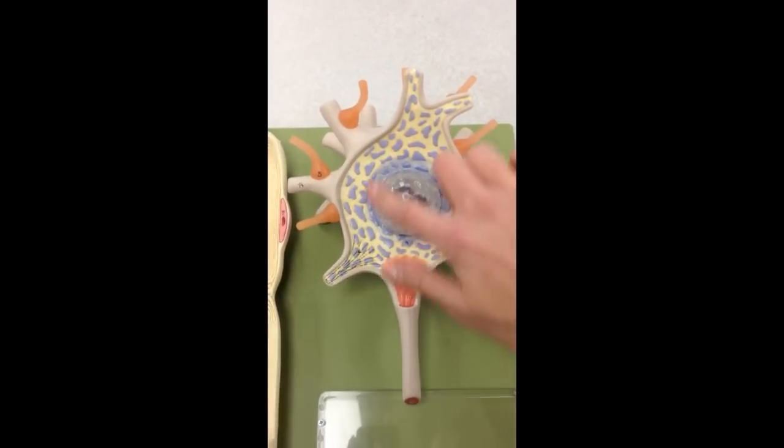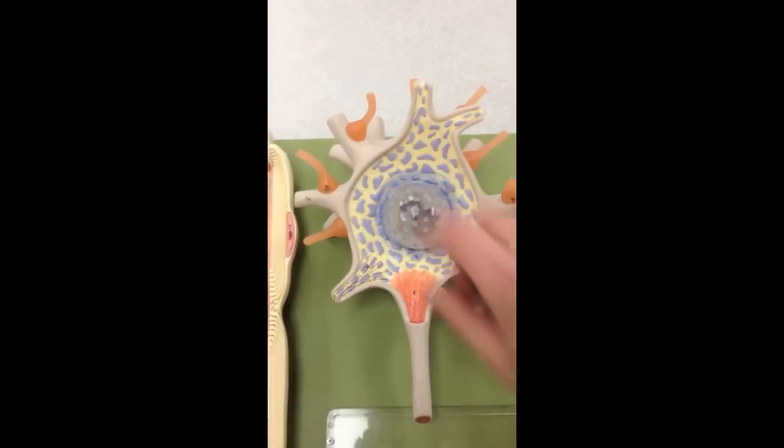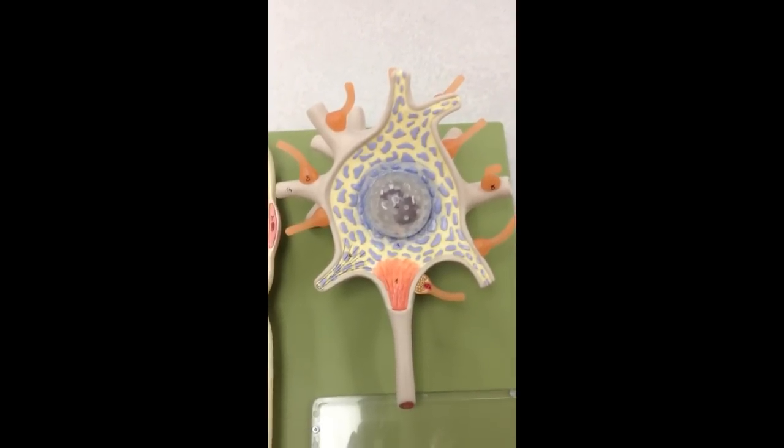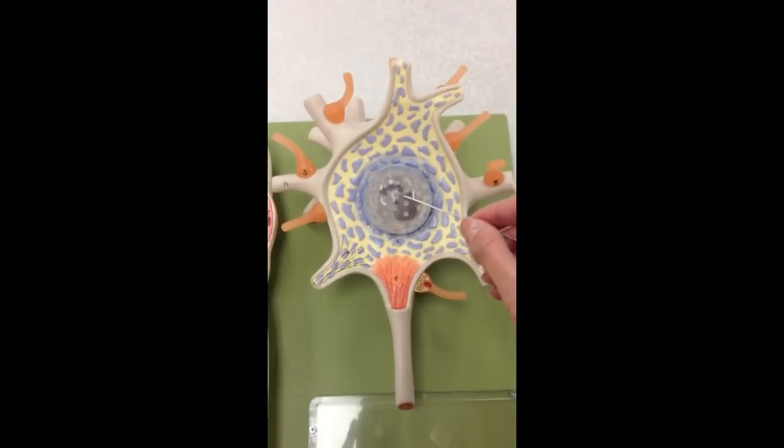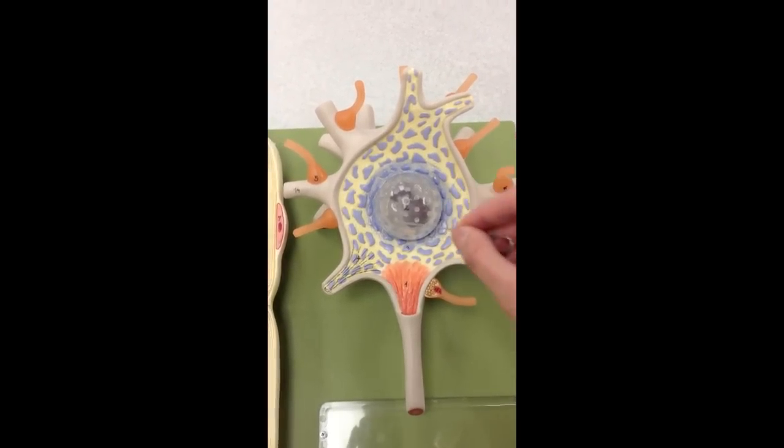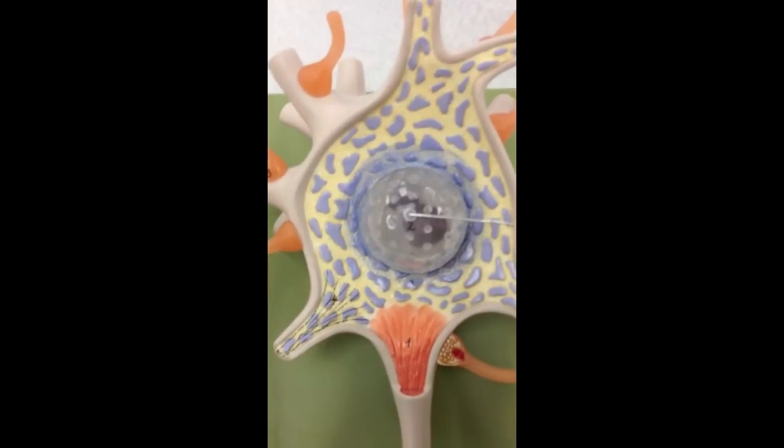This whole thing, this whole circular area right here, is the cell body. This center portion right here is the nucleus.